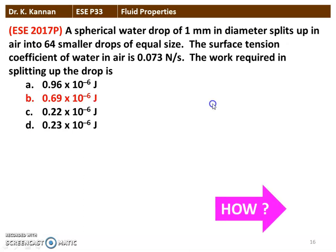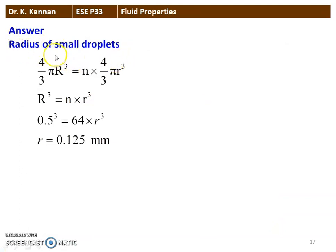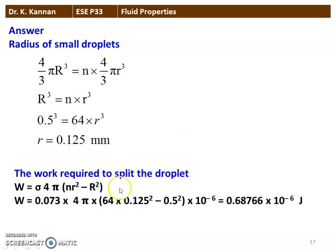Option B — we will see how. First, we calculate the radius of the smaller droplet: (4/3)πR³ = n × (4/3)πr³, simplifying to R³ = n × r³. Substituting: (0.5)³ = 64 × r³, giving r = 0.125 mm. The work required to split the droplet is W = σ × 4π × (n × r² − R²). Substituting: 0.073 × 4π × (64 × 0.125² − 0.5²) × 10⁻⁶ = 0.68766 × 10⁻⁶ joules.